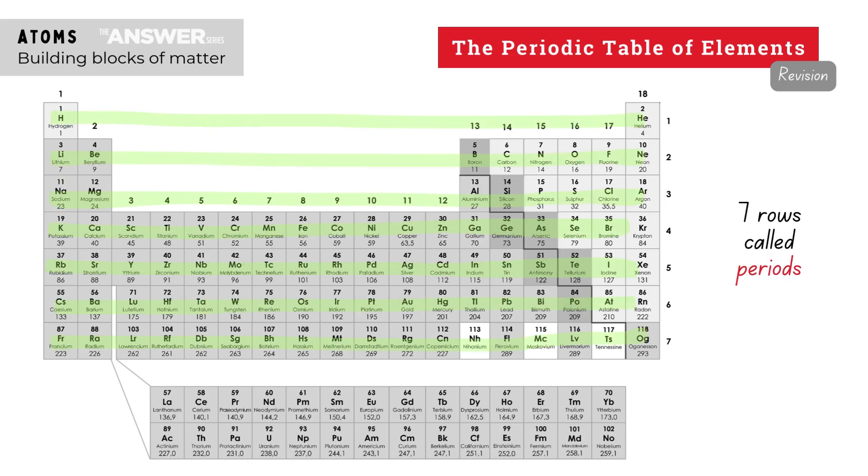Elements are arranged in horizontal rows called periods from 1 to 7. Elements are also arranged in vertical columns called groups from 1 to 18.